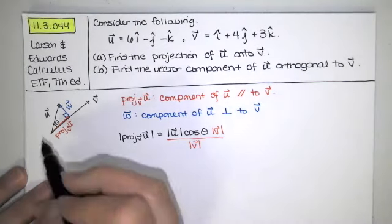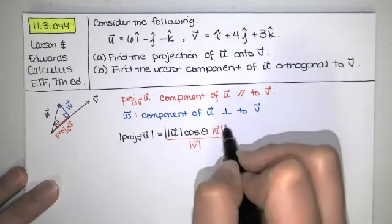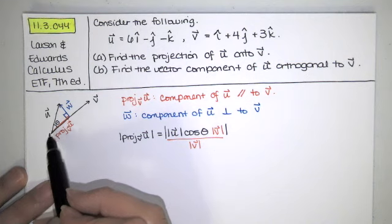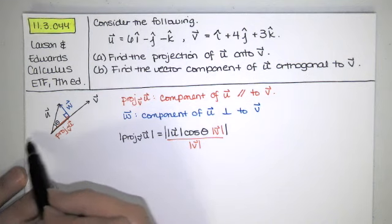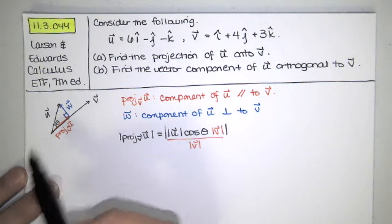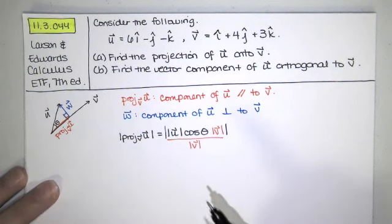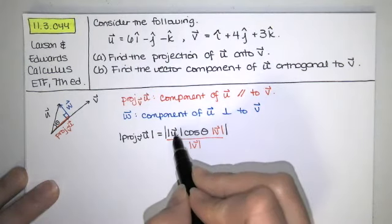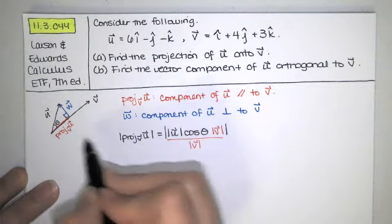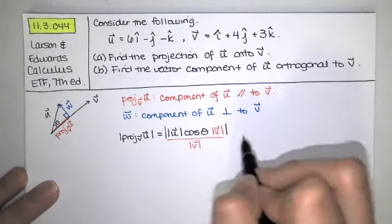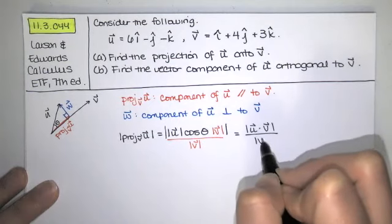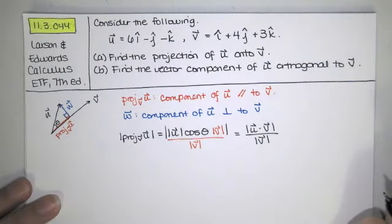And for the length of the projection, we need absolute values here because if the angle between u and v is such that v is sort of over here in this direction, the cosine of theta would be negative as well. So we need absolute value here in order to get the length of the projection. So this gives us the magnitude of u dot v divided by |v|. That's the length of the projection.